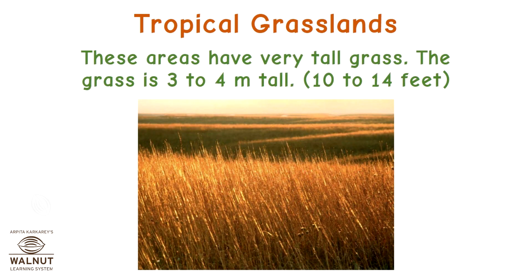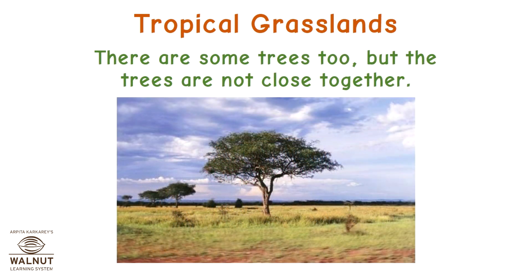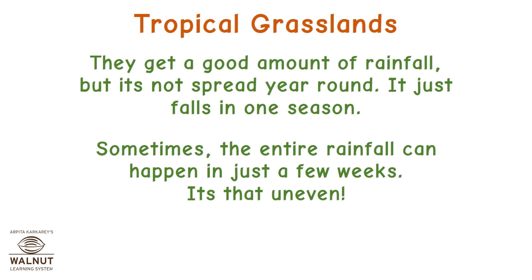These areas have very tall grass — 3 to 4 meters tall, that is 10 to 14 feet. There are some trees too, but they are not close together. They get a good amount of rainfall, but it's not spread year round — it falls in just one season, and sometimes the entire rainfall can happen in just a few weeks.